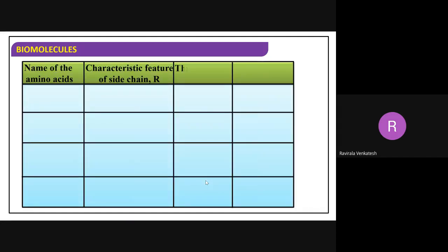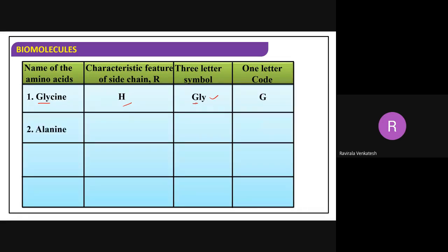Let me see the nomenclature for all of these. First, glycine - R is hydrogen. Take the first three letters: GLY, and the one-letter code is G. Next is alanine - R is CH3. Take ALA, and the one-letter code is A.